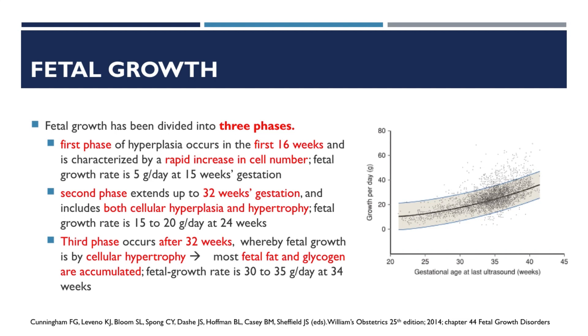The corresponding fetal growth rates during these three phases are 5 grams per day at 15 weeks' gestation, 15 to 20 grams per day at 24 weeks, and 30 to 35 grams per day at 34 weeks.